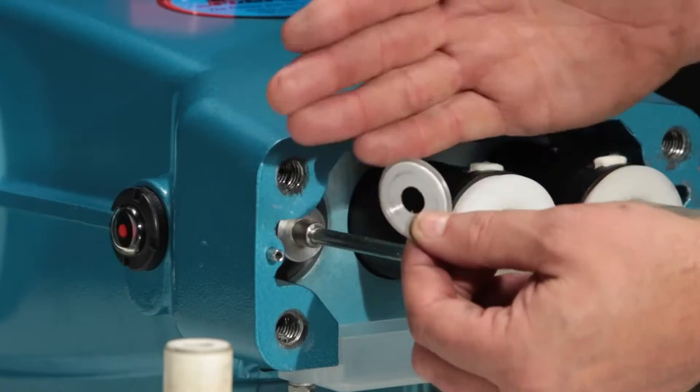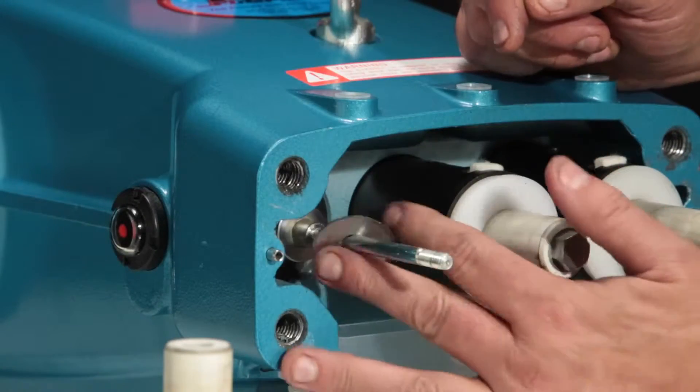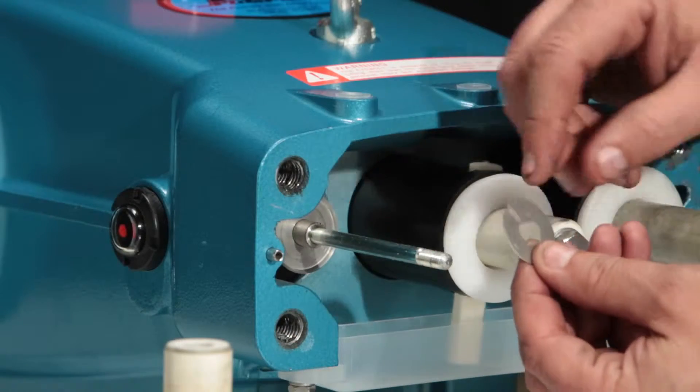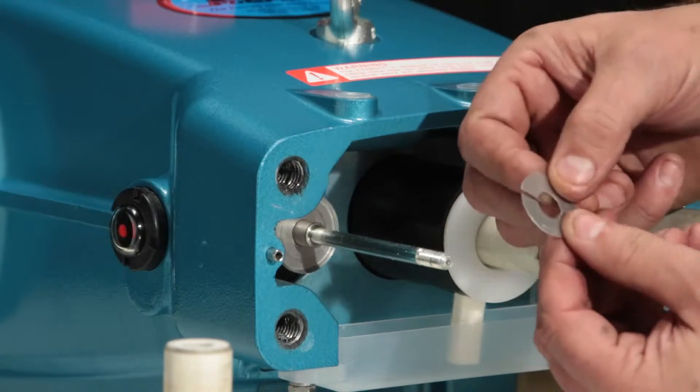To reassemble, start with the barrier slinger with the cup away from the oil seal, followed by the keyhole washer. Direction is not important.